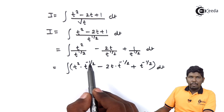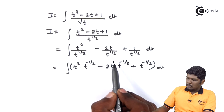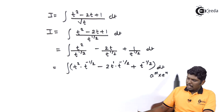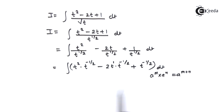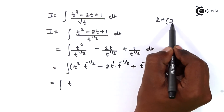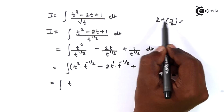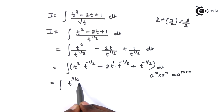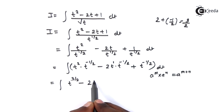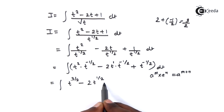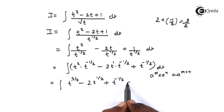In the next step, these powers will be added using the formula a raised to m times a raised to n equals a raised to m plus n. That gives t raised to 2 plus minus half, which is 3 upon 2, minus 2 times t raised to 1 plus minus half, which is half, plus t raised to minus half, dt.